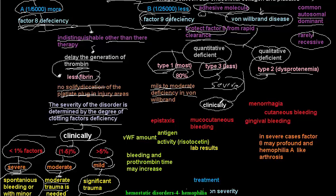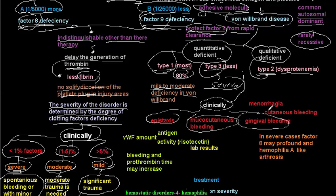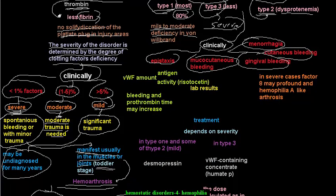How does von Willebrand disease manifest clinically? Mostly it presents as epistaxis, mucocutaneous bleeding, gingival bleeding, or cutaneous bleeding. Menorrhagia is very important as a manifestation of von Willebrand disease and is quite common. Bleeding after pregnancy or after delivery — after some weeks — is also common in von Willebrand disease.